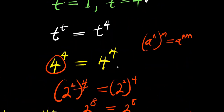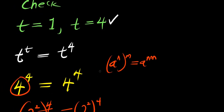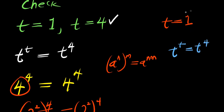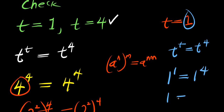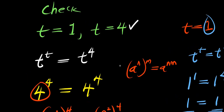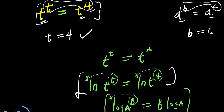You can also check when t equals 1, using the same equation t power t equals t power 4. You substitute 1 for t: 1 power 1 equals 1 power 4. One to the power of 1 is 1, and 1 to the power of 4 is 1. So left-hand side equals right-hand side. That is it guys, that is the end of this video. Thank you and see you again.